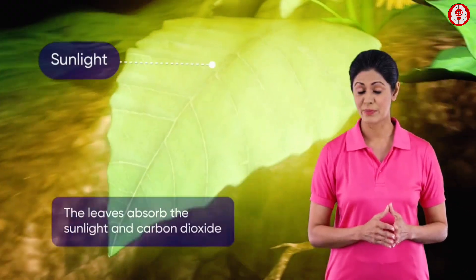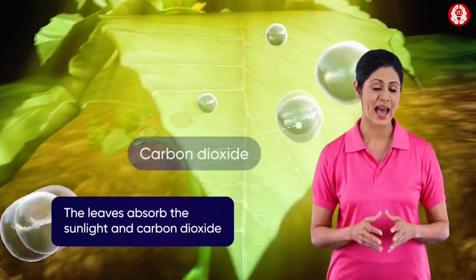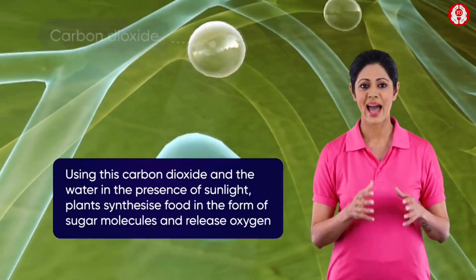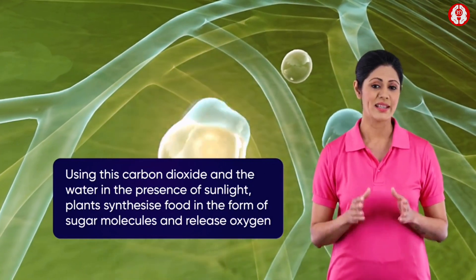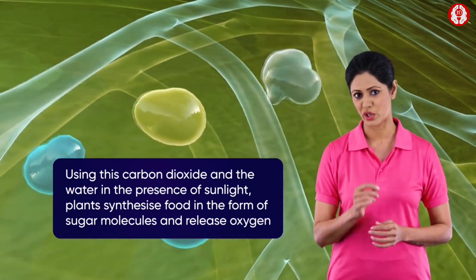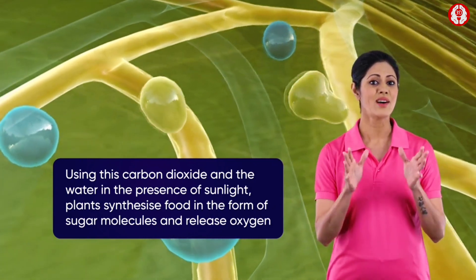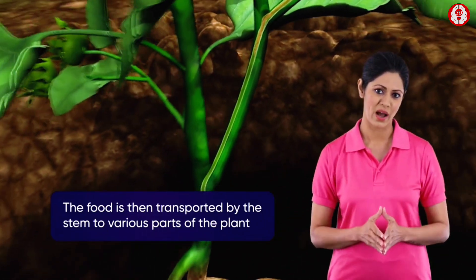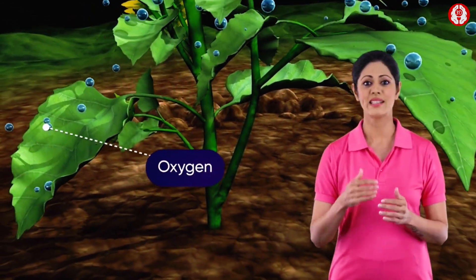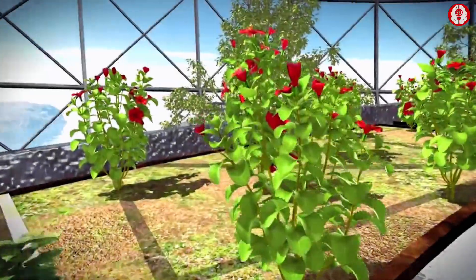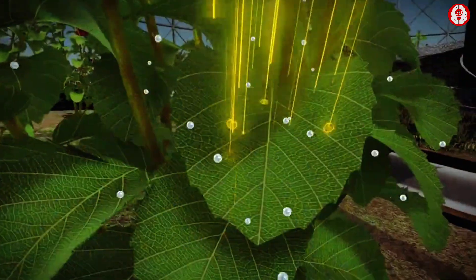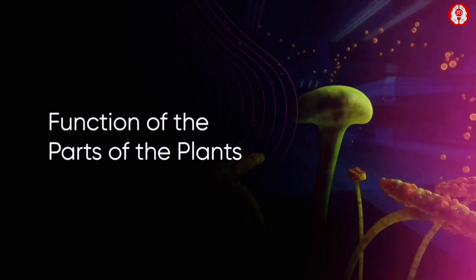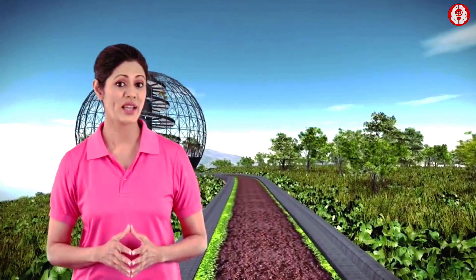The leaves absorb incident sunlight and carbon dioxide from the air. Using this carbon dioxide and water, in the presence of sunlight, they synthesize food in the form of sugar molecules and release oxygen. The food is then transported by the stem to various parts of the plant, and oxygen is evolved as a by-product.